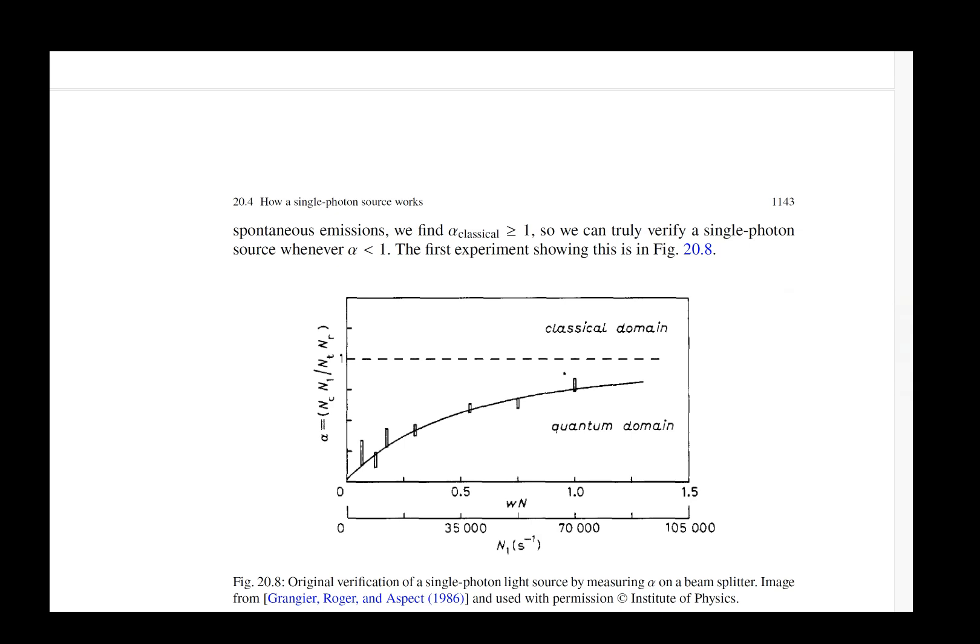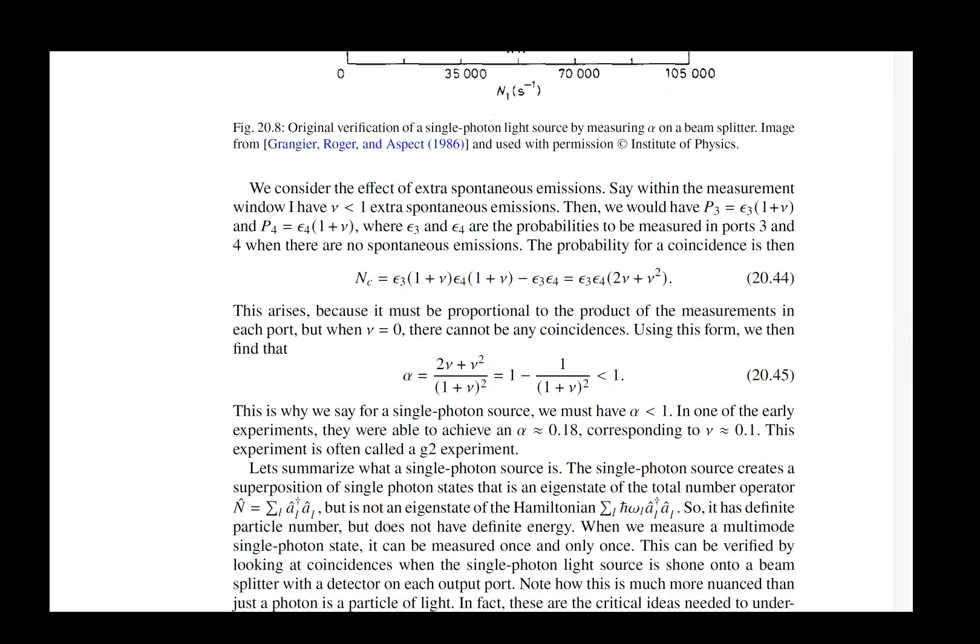So dim lasers are never single photon sources, even though you will find quantum textbooks that will say we make it into a single photon in our experiment by making the laser very dim. No, that is not a single photon experiment. You don't get single photon statistics. It is not the same thing. Understanding that difference is one of the key things that we talk about in this section.